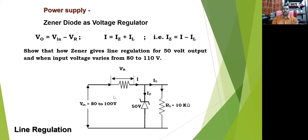In this simple connection, we have a series resistance with a voltage drop VR across it. The total current flowing is I, which divides into two parts according to Kirchhoff's current law: IZ through the Zener diode, and IL the load current going through the load resistance RL.